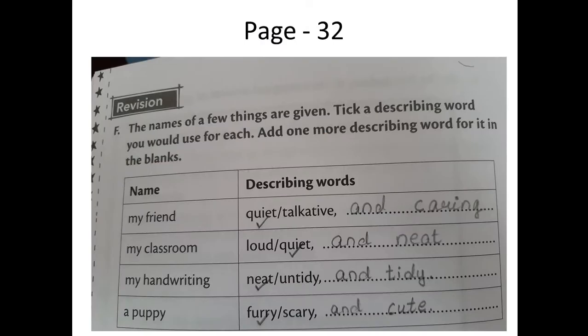I hope you are ready with page 32 from the book writing. Now, what is question F? The names of a few things are given. Take a describing word you would use for each and add one more describing word in the blanks. Describing words are adjectives, which are a part of speech. For 'my friend,' I have chosen quiet — you can choose talkative if your friend keeps on talking. From quiet and talkative, choose one. And one more you have to write: you can write funny, caring, or supportive. I have written caring — C-A-R-I-N-G — which is a describing word for my friend.